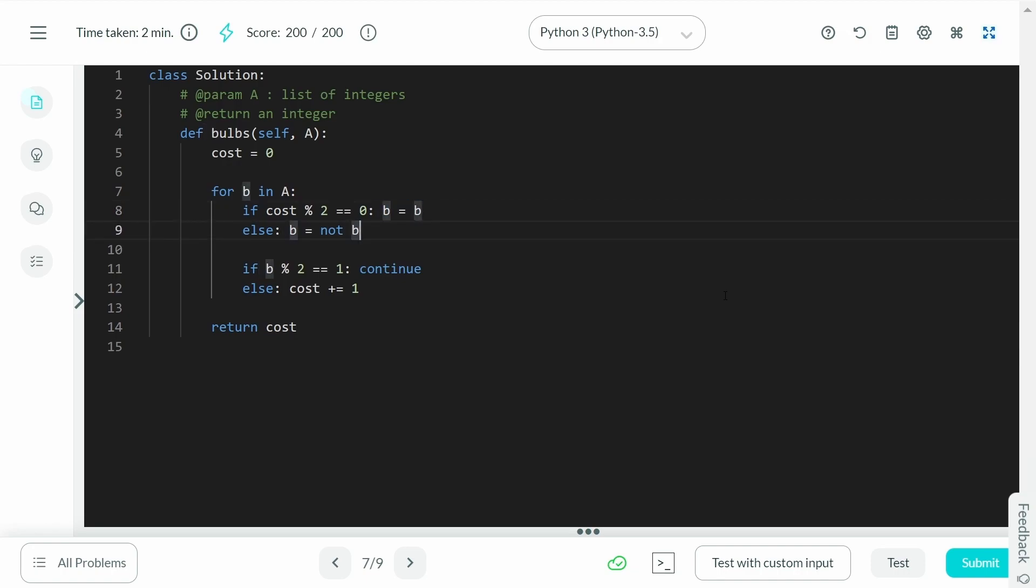Else, b equals to not b. That is, if the bit was one, it becomes zero and if it was zero, it becomes one. And now, we can again ask the question as before. We can say that if this current flipped bit is equal to one, then what? Well, just continue as is and in the else condition, we'll increase the cost by one.